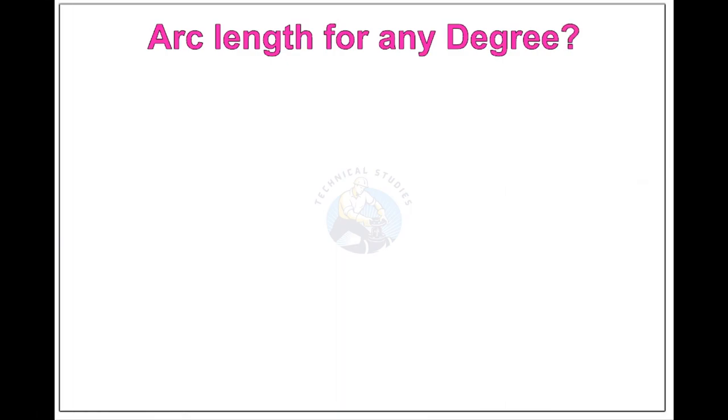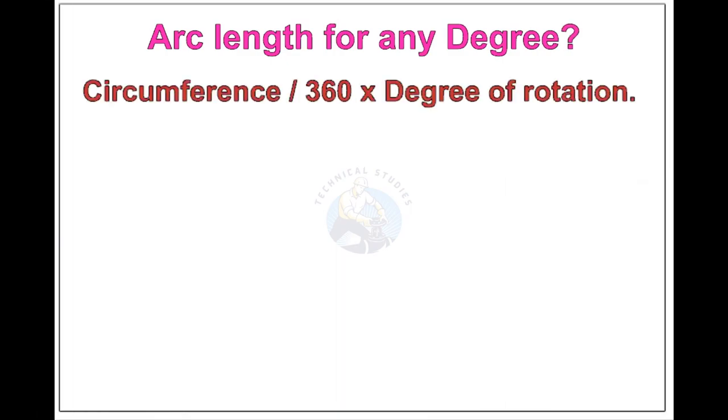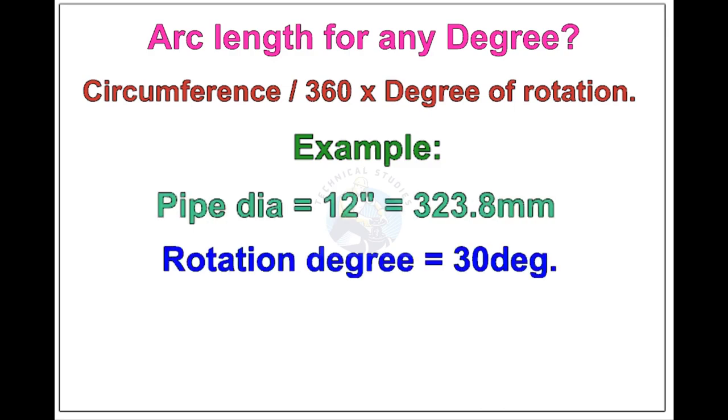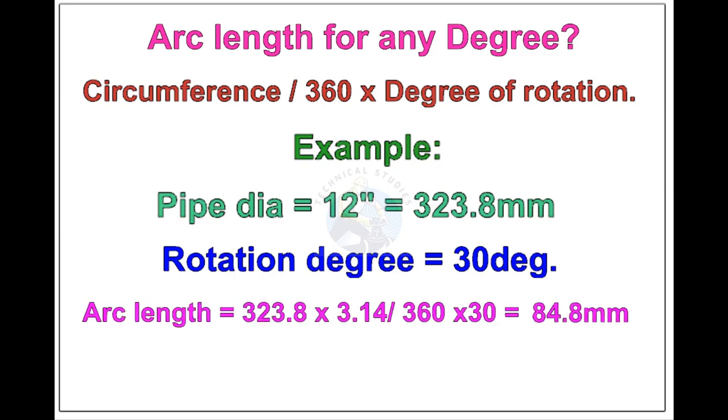Arc length of any degree: circumference of the pipe divided by 360 into the degree of rotation. Let us check the arc length of 12-inch pipe rotated 30 degrees. Apply the formula. The answer is 84.8 millimeters.